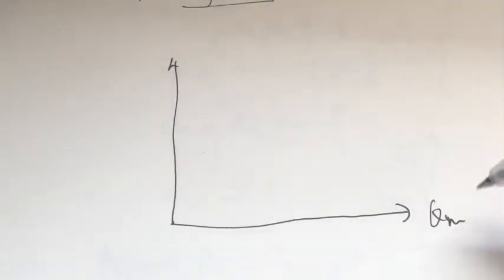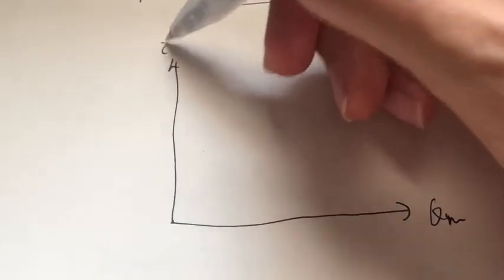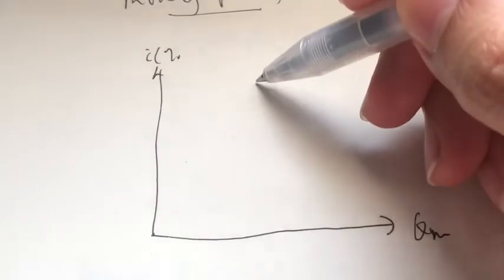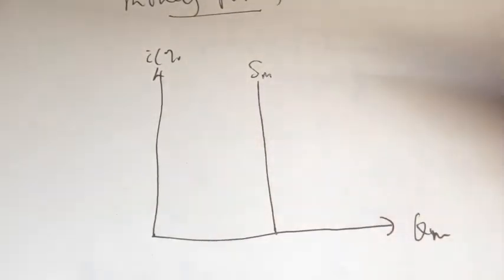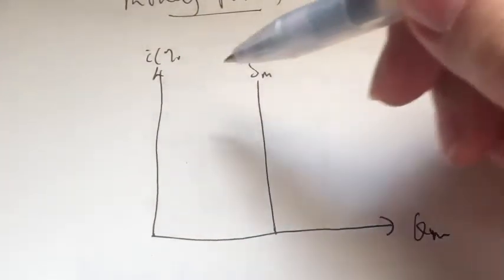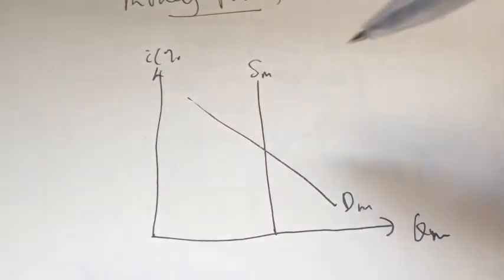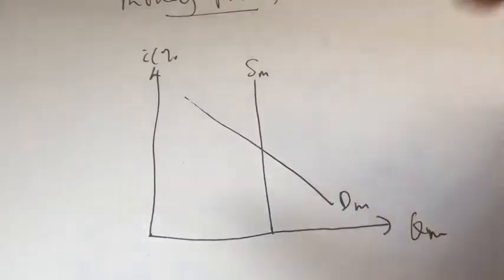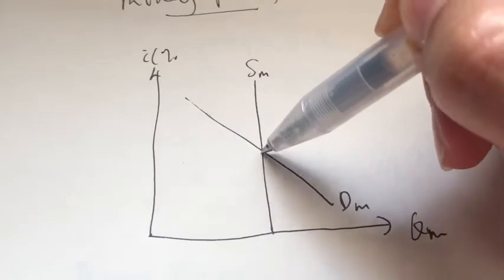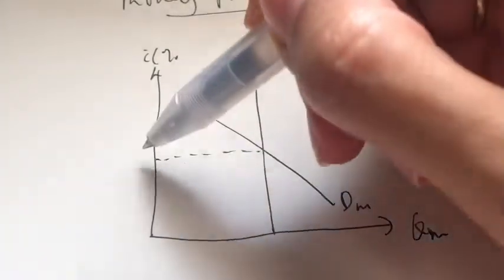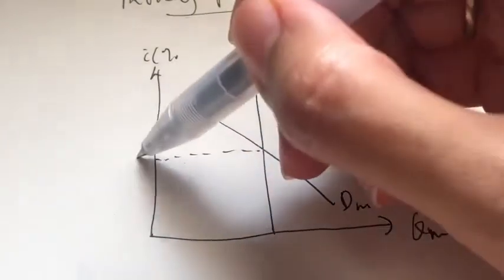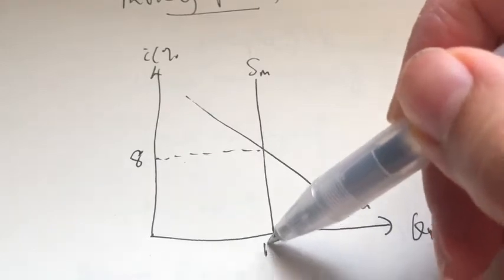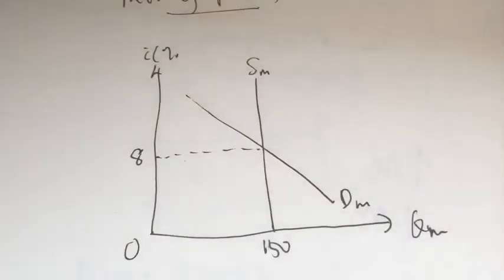Here we have the quantity of money on the x-axis and the interest rate on the y-axis. The supply of money is a straight vertical line, and the demand for money is downward sloping. Do check my previous videos on why the shapes of these two curves are like that. The point where they intersect gives us the equilibrium interest rate — let's say 8% — and the equilibrium money supply is 150 million.